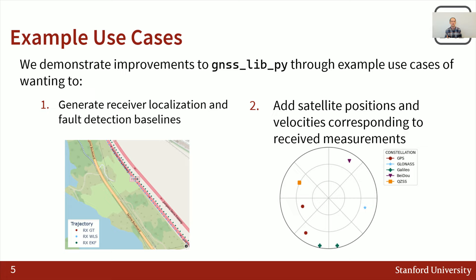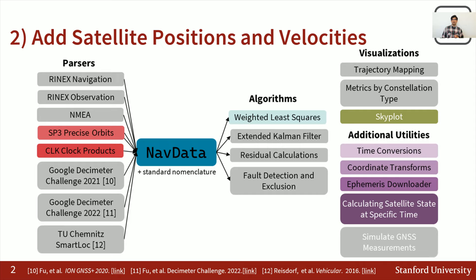Now Ashwin will talk about the second example. Hi, I'm Ashwin Kandere, also a PhD student in the Stanford Nav Lab. I'm going to talk about how you can use gnss_lib_py to add satellite positions and velocities corresponding to measurements you've already received and recorded. In this case we're going to use SP3 precise orbits and CLK clock products. To verify we've computed these SV states, we'll use weighted least squares to generate a state estimate, and then show a skyplot of the received satellite states.